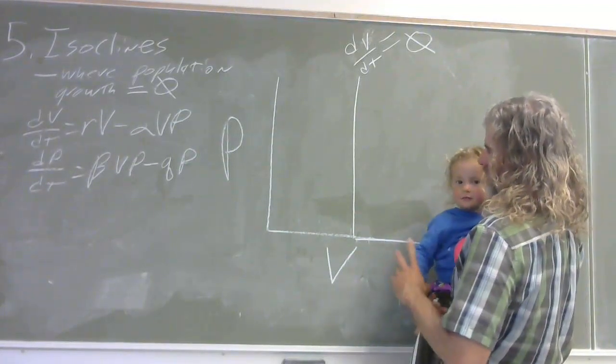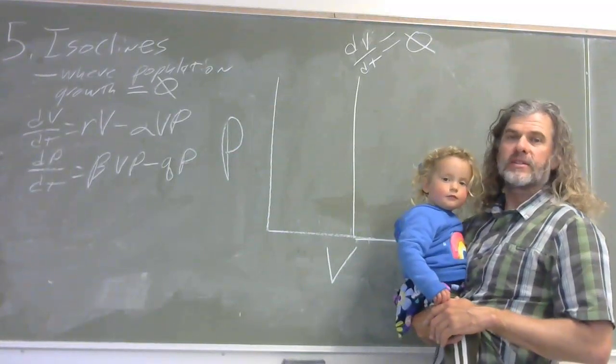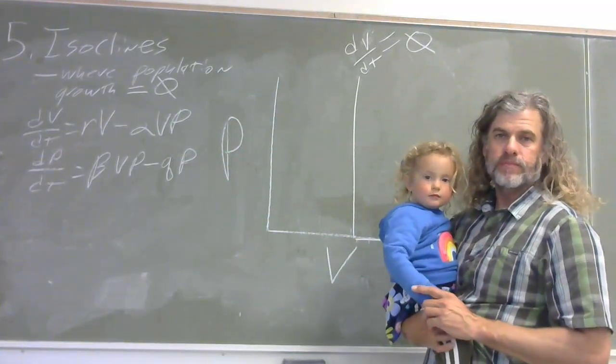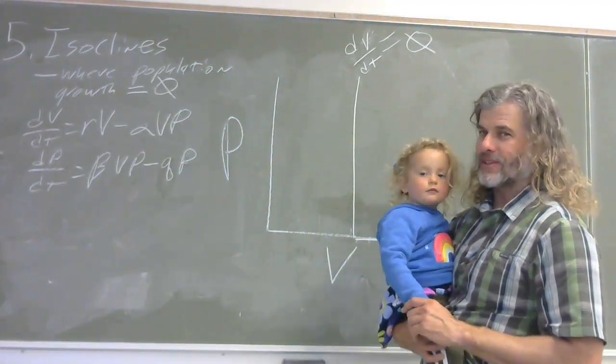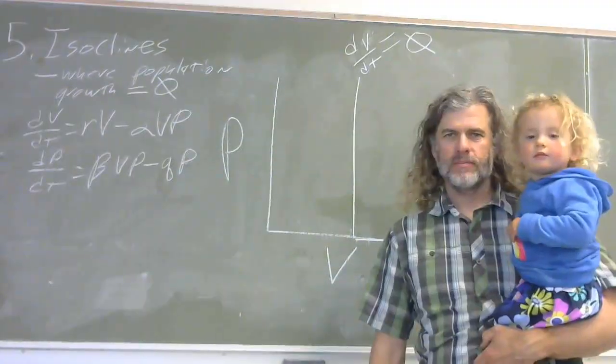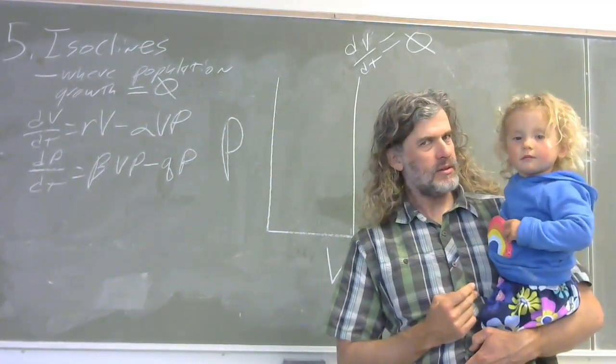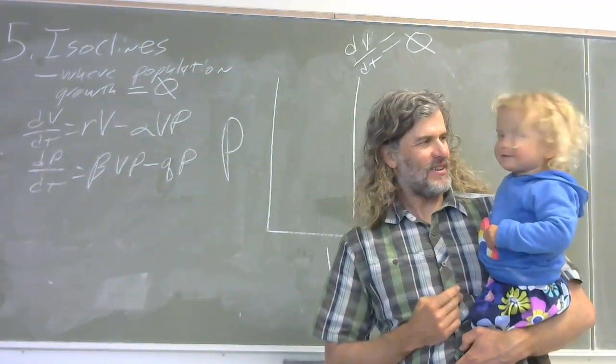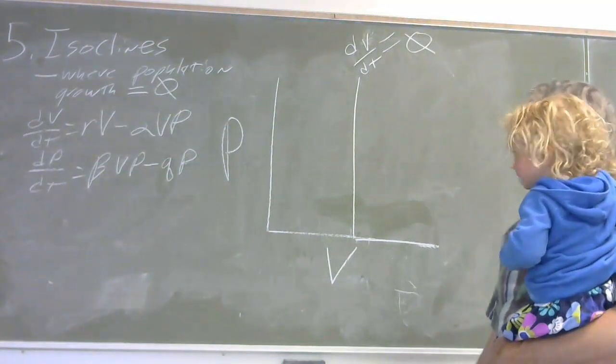The population growth rate is zero here. And so what is greater than zero? Positive. What is less than zero? Negative. Okay. What are we going to draw? Isoclines. Yeah. Let's see it. Isoclines. That's right. We love isoclines.